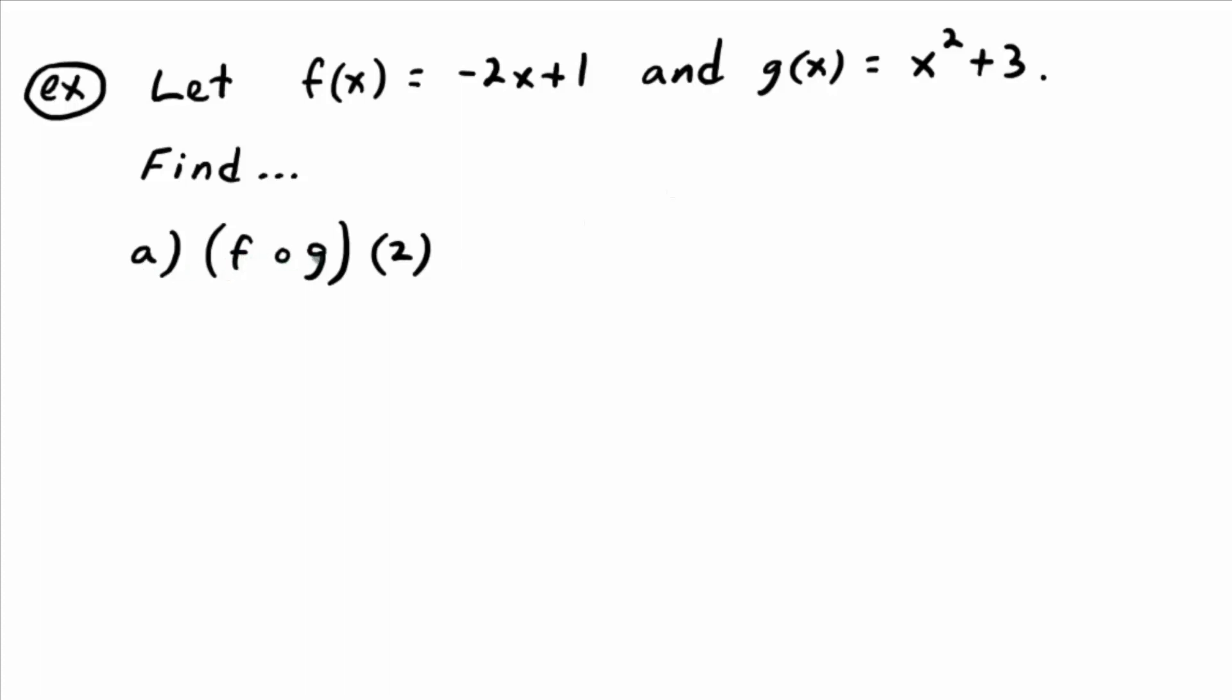F composed with g, looks like the word fog, right? But now I'm turning it around. Instead of g composed with f, it's f composed with g of 2. So you would read this, f composed, you've got to get used to the language, f composed with g. So the assumption is that's going to be a function all by itself. And then the parentheses 2 is just function notation of 2.